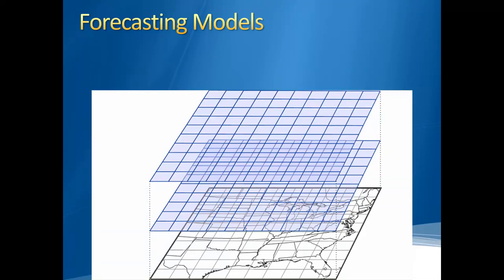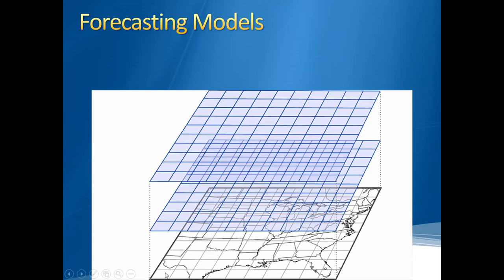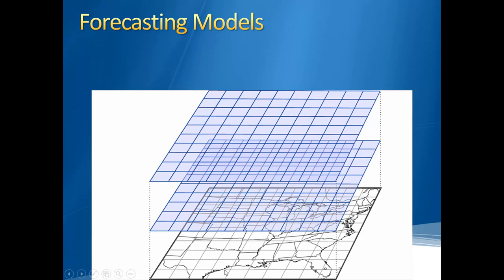Here's an image of how a forecasting model works. We take the eastern United States, split it up into a grid with a series of grid boxes, and the forecast model then makes a prediction for weather conditions — temperature, dew point, relative humidity, cloud cover, precipitation, and so on — for each of those grid boxes. As meteorologists, we don't just care about what's happening at the surface; we also want to know what's happening at other layers and elevations of the atmosphere.